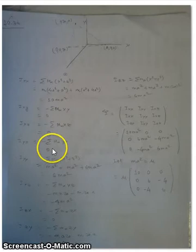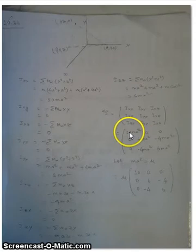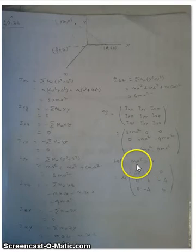The Iyy component is 6ma squared. And doing that for all other components, I finally get the inertia tensor. And for simplicity, I have assumed ma squared to be μ, so I can further simplify the inertia tensor in this form.